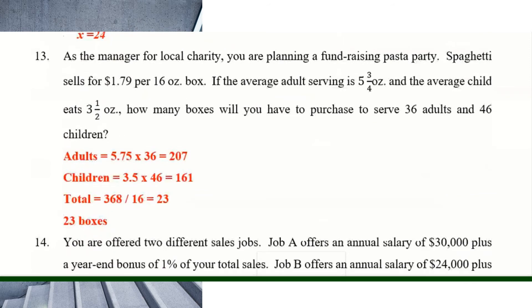Number thirteen: managing a fundraising pasta party. Spaghetti sells for $1.79 per 16-ounce box. The total amount needed is 368 ounces. Divide 368 by 16 and you need 23 boxes.